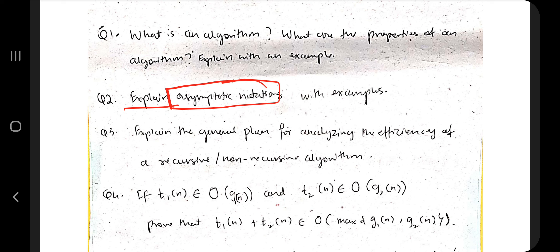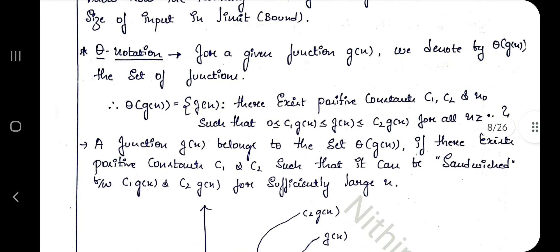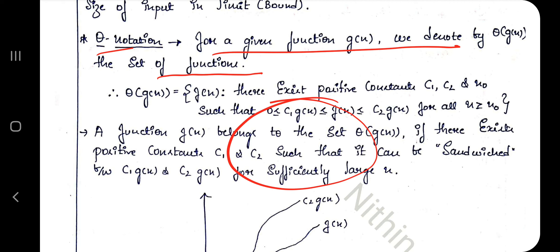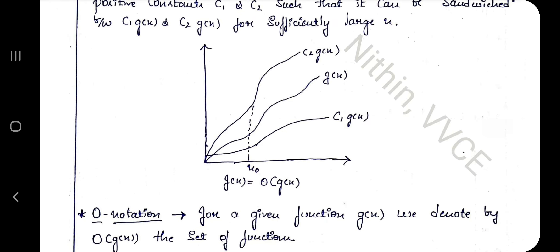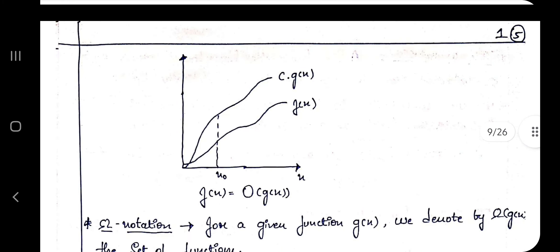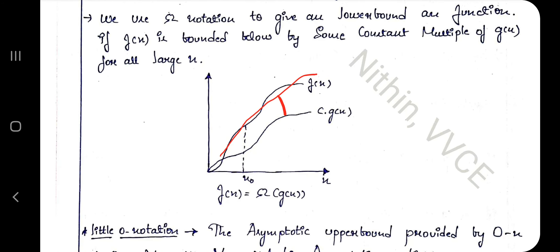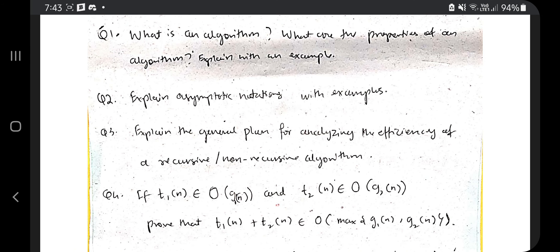The second question is: explain asymptotic notations with examples. There are three: Big Theta, Big Omega, and Big O. Asymptotic notation can be found on page number 8. Theta means average — the function is enclosed between an upper and lower bound. Big O is the worst-case time complexity — the function can take more time up to this bound. Omega is the best-case time complexity — the function can be reduced to its best at that point. Make sure to draw the graphs as well so it's clear to the examiner.